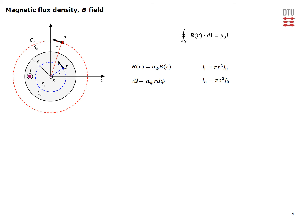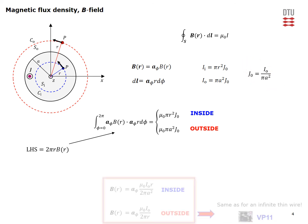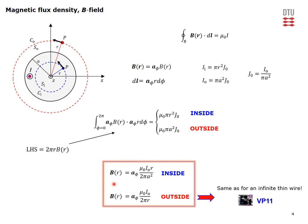Now we have all the ingredients to get the B field. Applying Ampere's law with the B field having only a phi component, using the DL element, the enclosed current for Ci, and the total current for the outer contour, the left-hand side evaluates to 2pi r times B. Expressing the right-hand side in terms of the total current I0 and relating it to the volume current density, we obtain the B field inside the cylindrical wire and outside it.